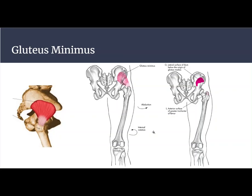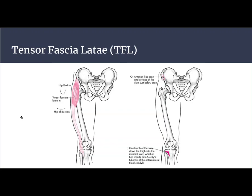The gluteus medius and minimus also share their neural innervation, which is the superior gluteal nerve. The gluteus maximus is innervated by the inferior gluteal nerve, while the minimus and medius use the superior gluteal nerve. The tensor fasciae latae, also a hip abductor, likewise uses the superior gluteal nerve — so all abductors share the same innervation. The TFL is anterior to the hip joint, inserting into the IT band, acting as a hip flexor and abductor, and along with the gluteus maximus, creates that abductor torque.